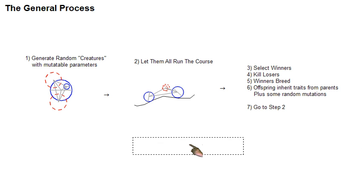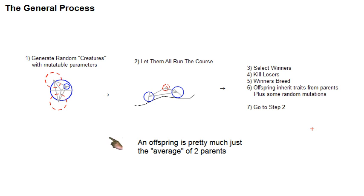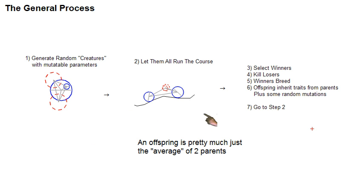An offspring in this case is pretty much just the average of two parents. Say one has a wheel at this position, another one has a wheel in another position — if they mated, the offspring would have a wheel right there in the middle. Or if one of these springs had a certain stiffness and another parent had another stiffness, the offspring would have the average of the two. It's just a very simple way to create offspring.